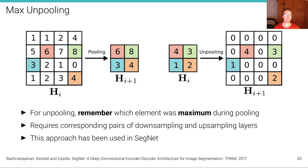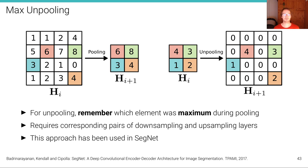There is also something called max unpooling. In max unpooling, we first remember which element was the maximum during the pooling operation. For instance, among four elements, six was the maximum; among another four, eight was the maximum, and so forth. When we upsample a feature map in the upsampling stage, we take that value and insert it at the location where the maximum was found during downsampling, using a bed-of-nails representation. The idea is to preserve high-level details and structures.